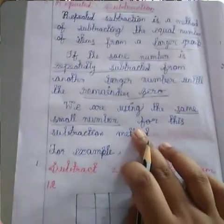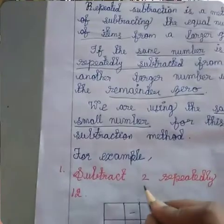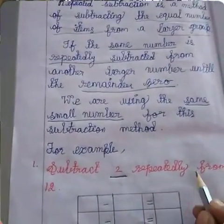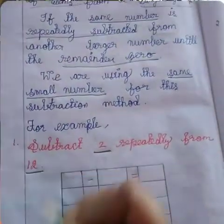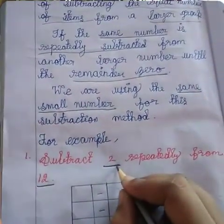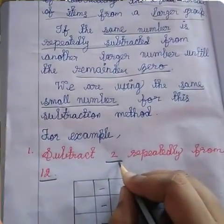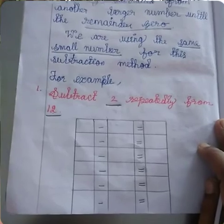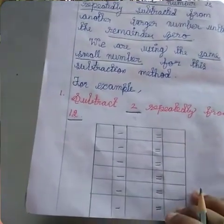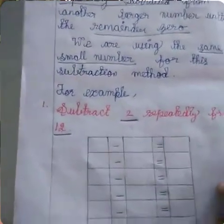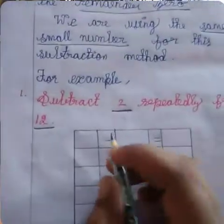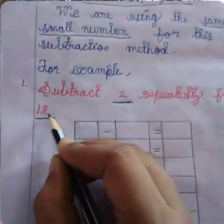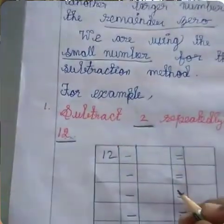See one example — you will clearly understand. Subtract 2 repeatedly from 12. You are going to subtract 2 repeatedly until you get 0 from 12. See this table — you have to put the table for the sum. Until you get 0, you have to divide the columns. First put the big number, which is 12, in the first column.